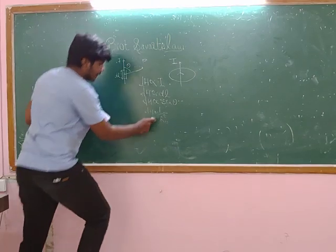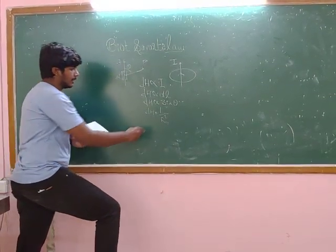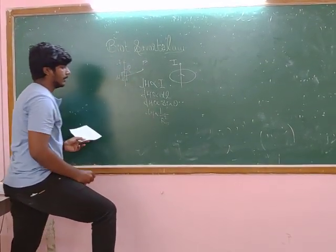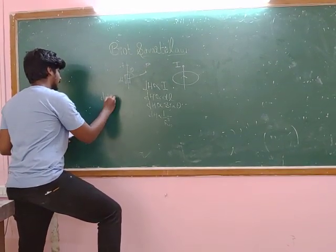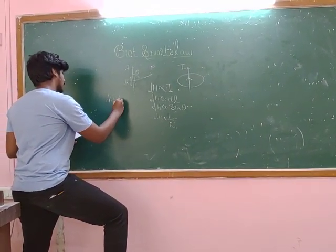As we are assuming proportionality, there is a proportionality constant which is basically given by μ₀ by 4π.